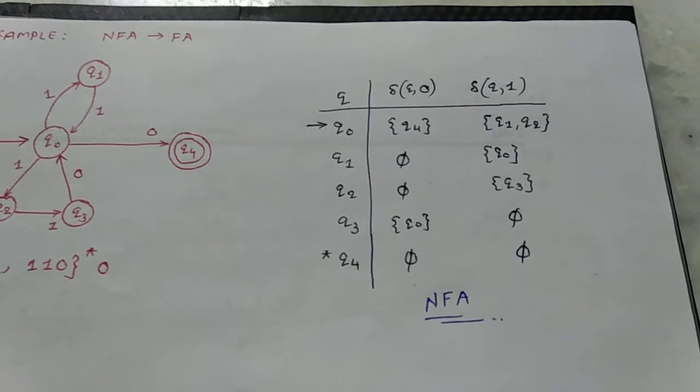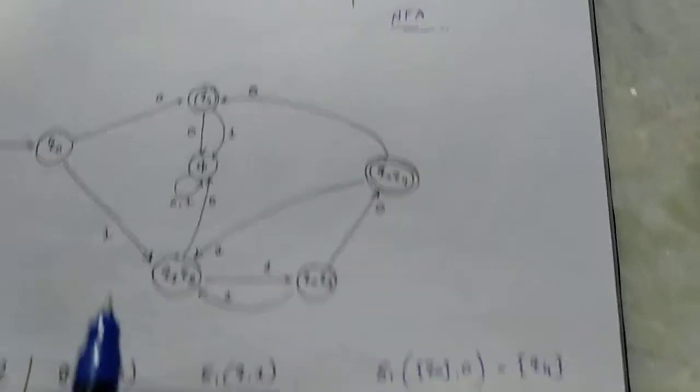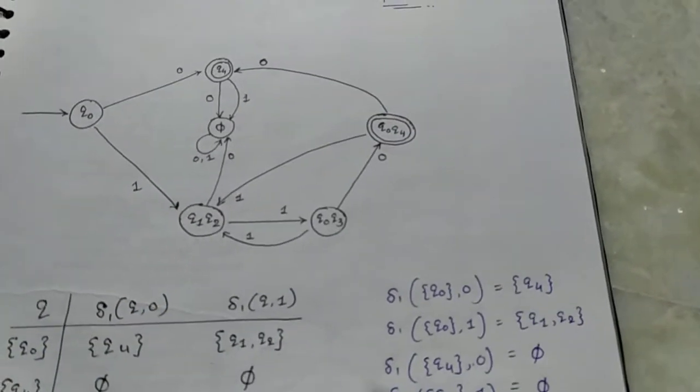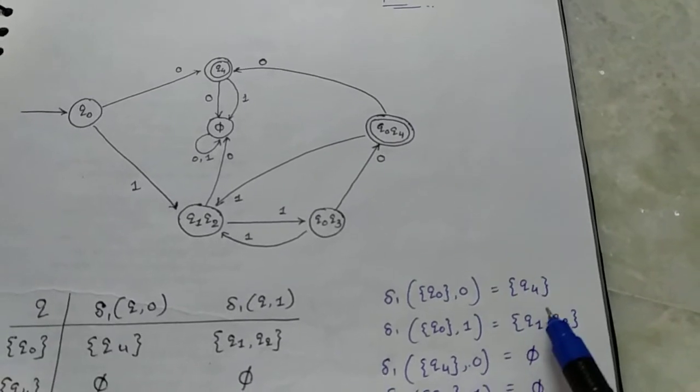q2 to 0 is null string. q2 to 1 is q3. q3 to 0 is q0. q3 to 1 is null. q4 has no zero or one input, so 0 and 1 are both phi.